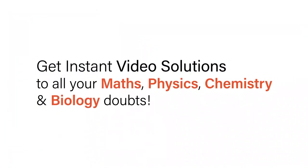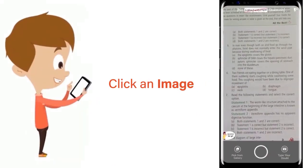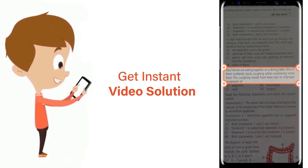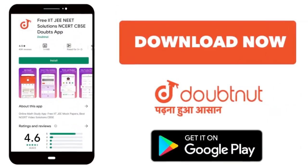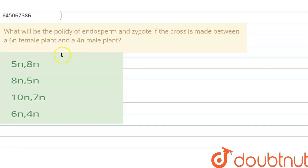With DoubtNet get instant video solutions to all your maths, physics, chemistry and biology doubts. Just click the image of the question, crop the question and get instant video solution. Download DoubtNet app today. Hello student, the question is what will be the probability of endosperm and zygote if the cross is made between a 6n female plant and a 4n male plant.